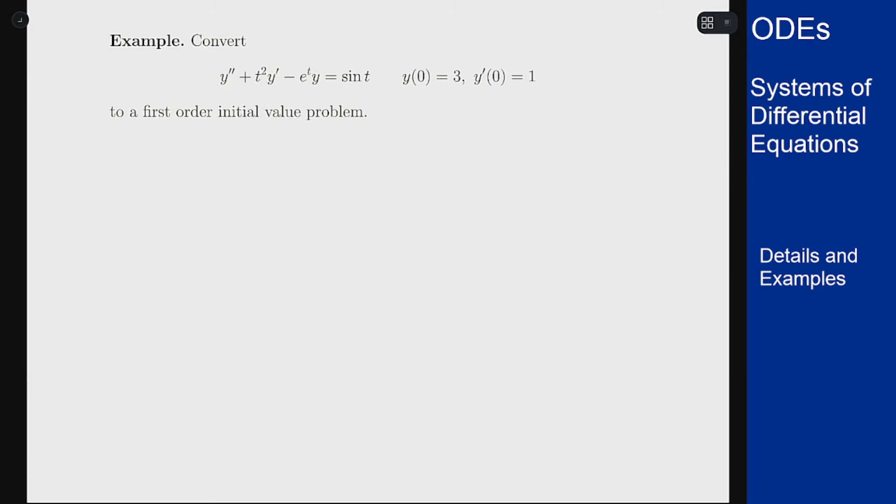Now, the key thing that we're going to need to work this out is we're going to have to add components to this system to make it work. And the general rule here is that for an nth-order equation, it's going to become an n-component system.